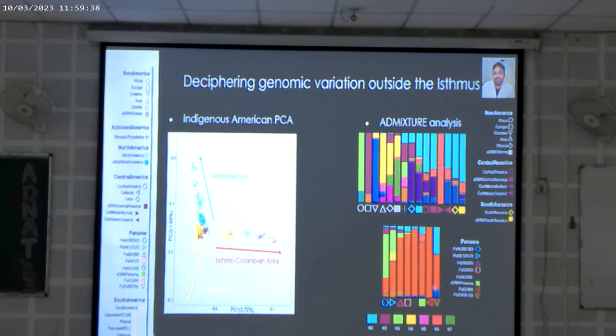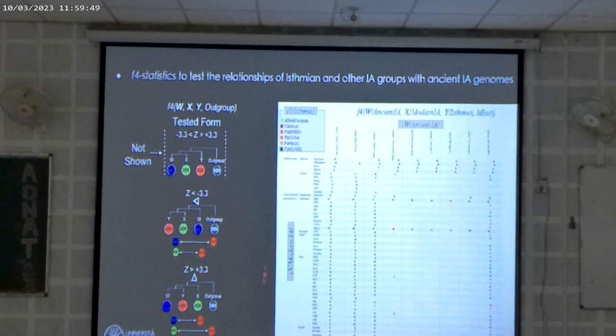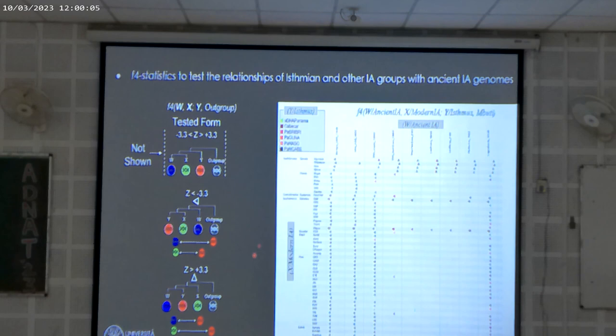So what is the origin of this distinctiveness? Marco made a lot of statistical analyses. I would like to show one: it is quite complex, but basically you use an outgroup — here it is an African population — and then you test your population groups. In this case, our indigenous groups from Panama and the ancient Panamanians are tested against modern groups and ancient groups.